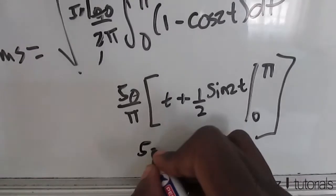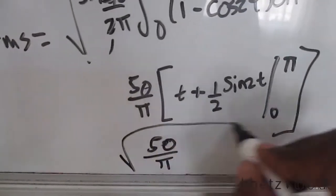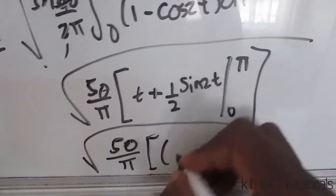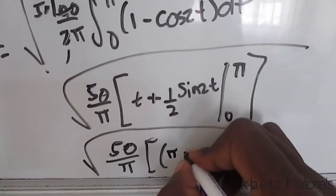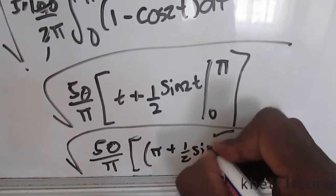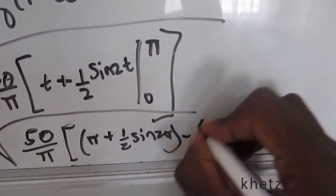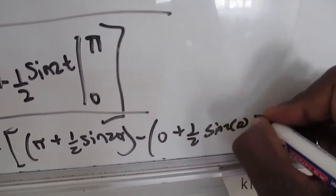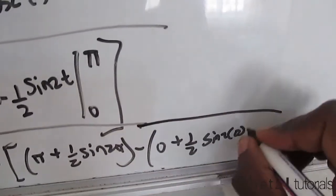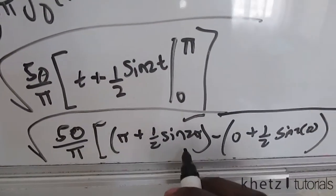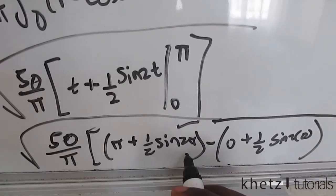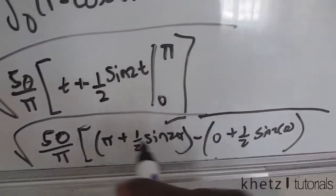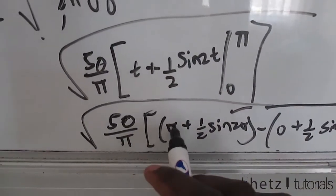You have to substitute pi and zero. So you're going to have 50 divided by pi, square root of that, then multiply by pi plus half sine 2 pi, subtract zero plus a half sine two times zero. Sine of 2 pi is zero, and sine of zero is zero as well, so you only have the pi here.